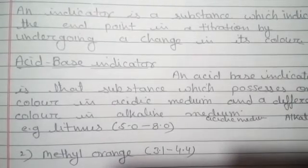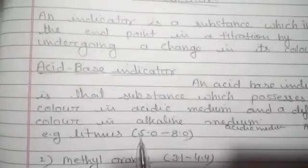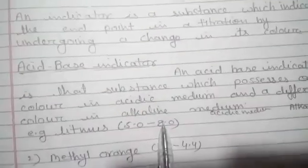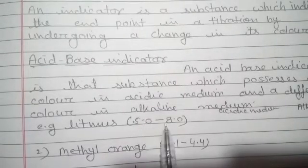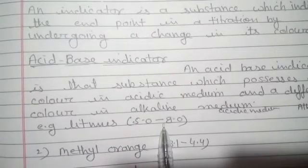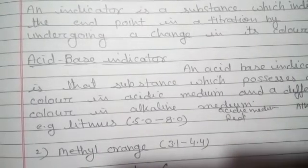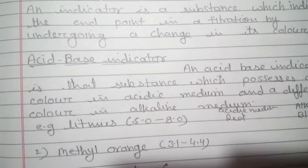The pH range of litmus is 5 to 8. In acidic medium it gives red color and in alkaline medium it gives blue color.